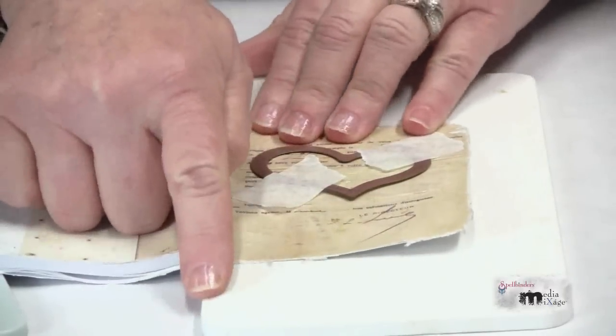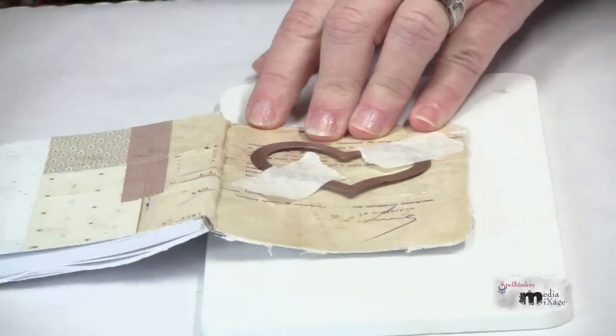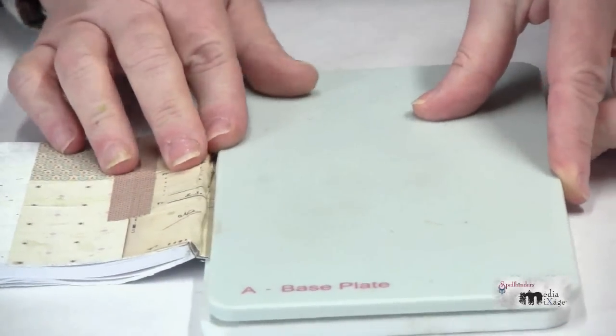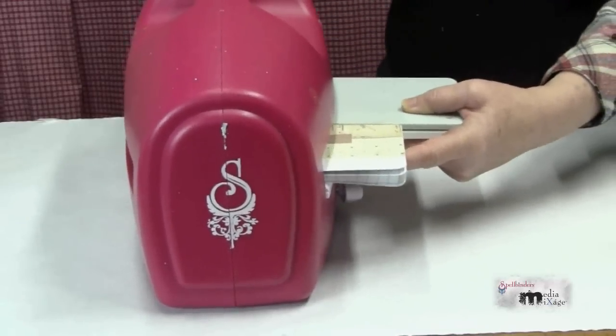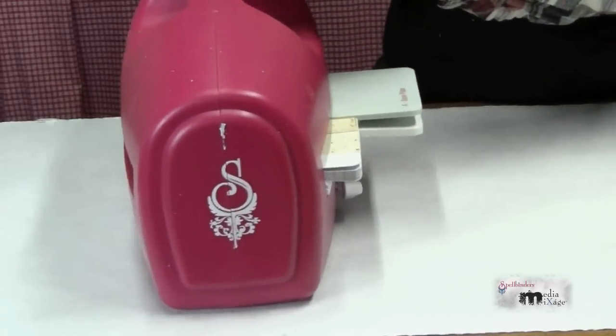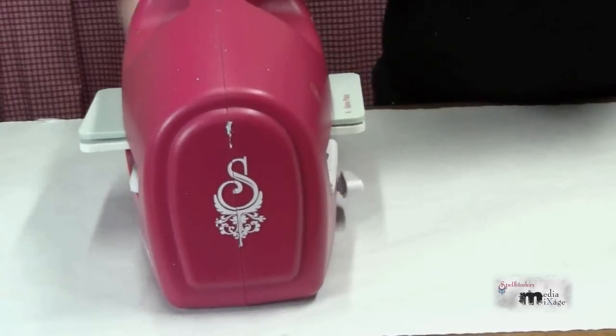Align the spine of the book with the edge of the Artisan Explorer cutting plate and complete the sandwich with a matching base plate. Pass this through the grand caliber machine with your book outside the cutting plate sandwich.